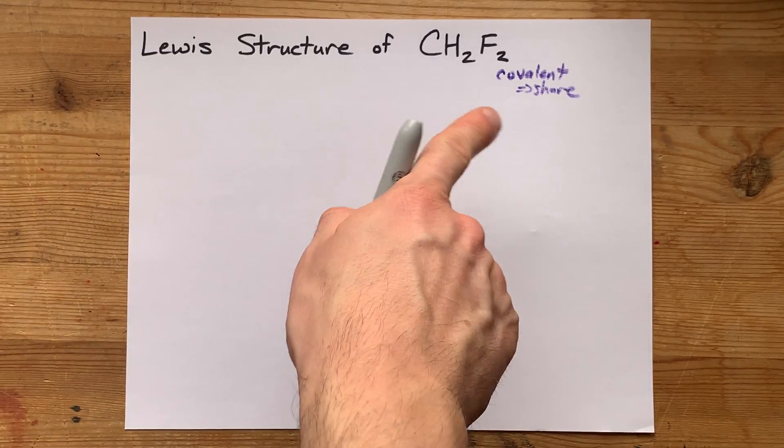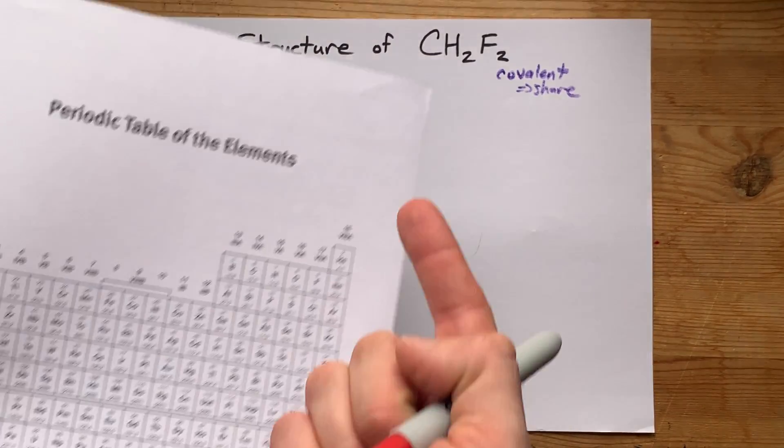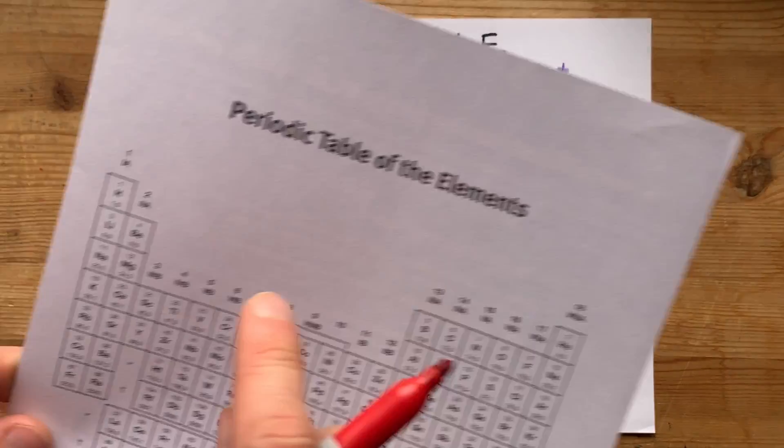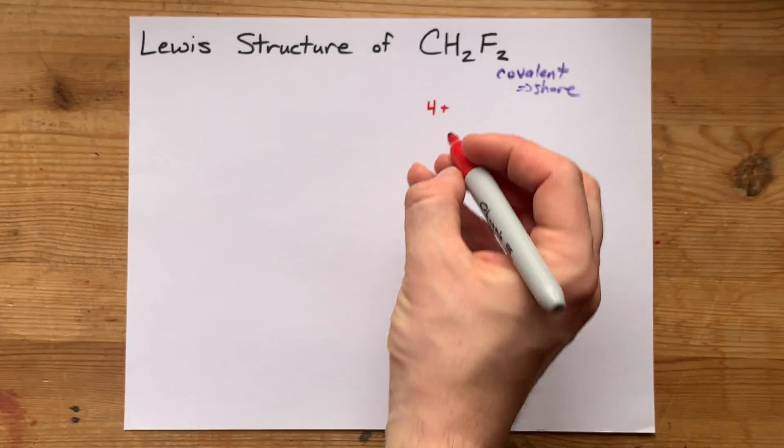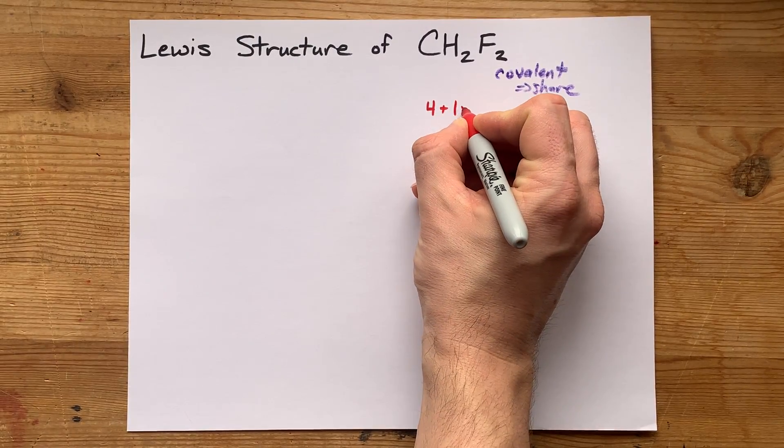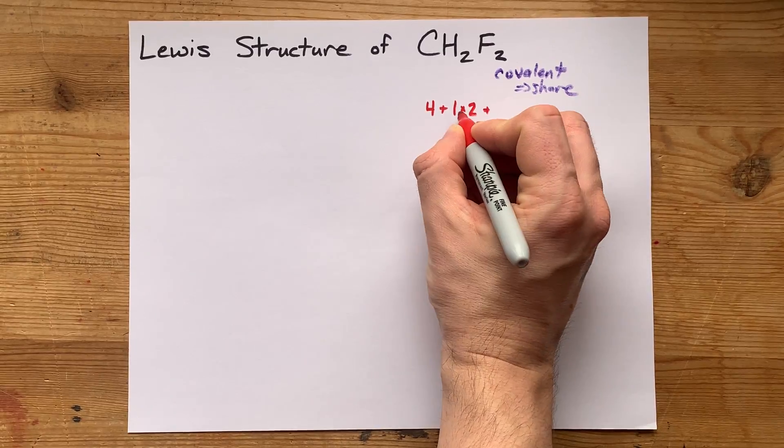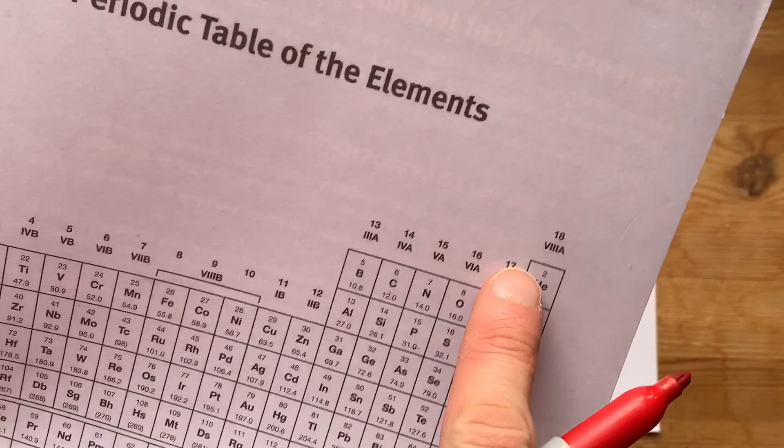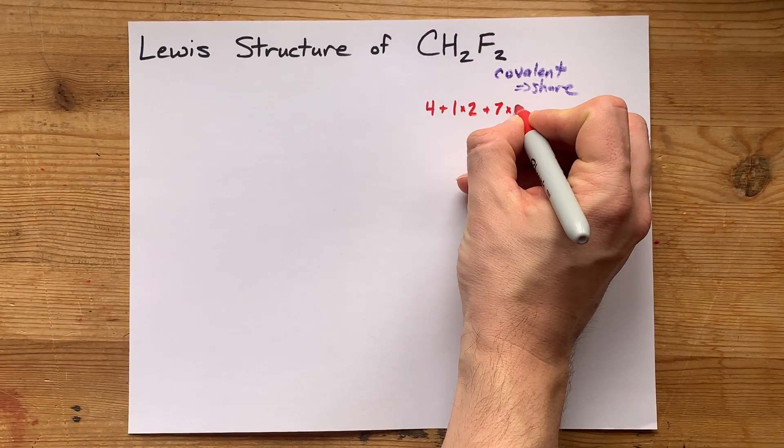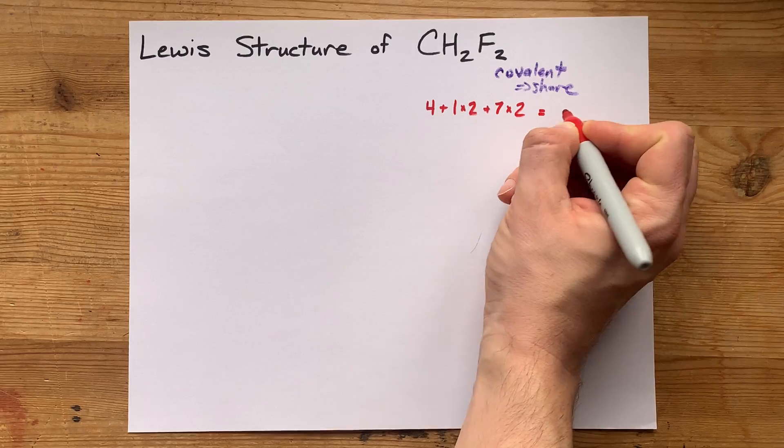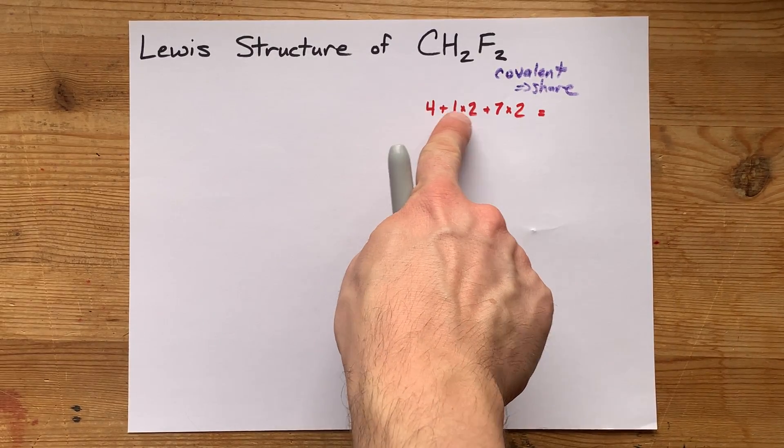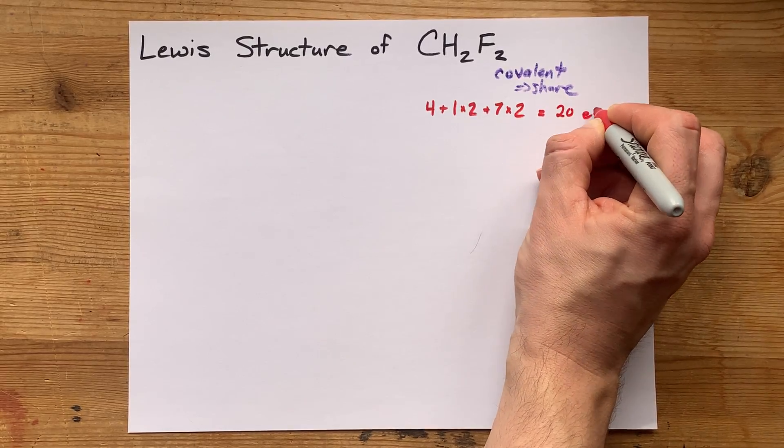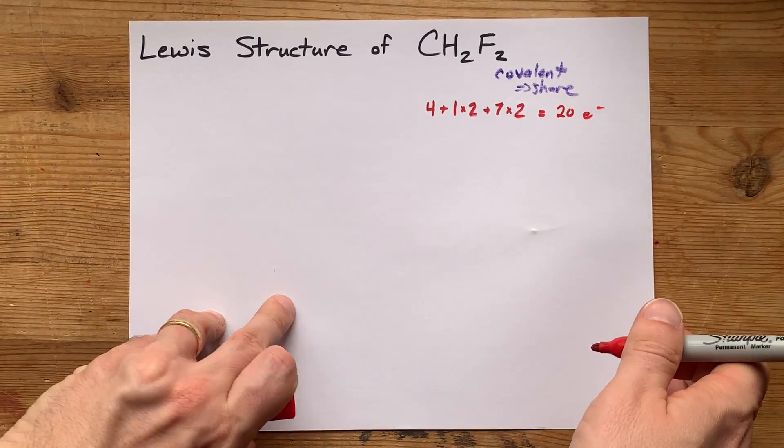Let's figure out how many electrons we're dealing with. Carbon in group 14 brings four valence electrons. Hydrogen in group 1 brings one valence electron, but don't forget there are two of them, so 1 times 2. And fluorine in group 17 brings seven valence electrons, but there are two of those as well. So 4 plus 2 plus 14 gives me 20 electrons total for this Lewis structure.